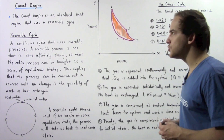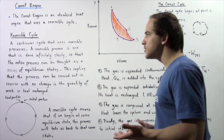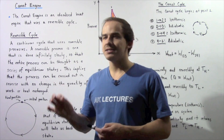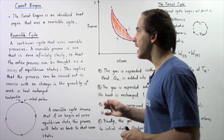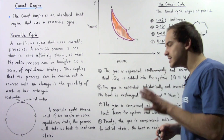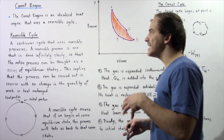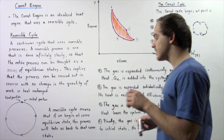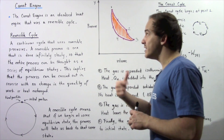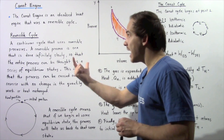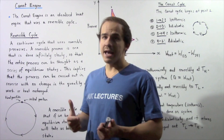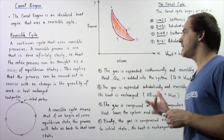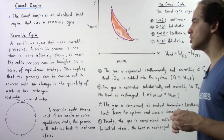The Carnot engine is an idealized version of the heat engine that uses a reversible cycle, and a Carnot engine does not actually exist because a reversible cycle does not actually exist. We study this idealized version to help us explain the way the heat engine actually works.